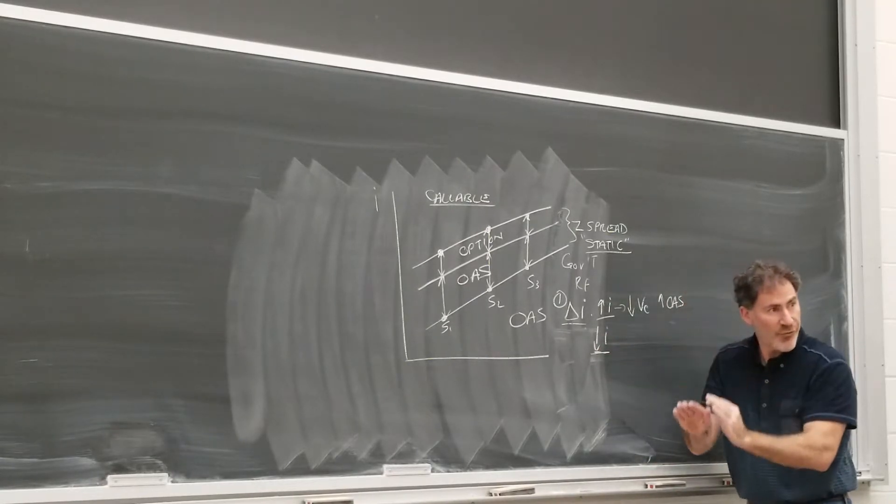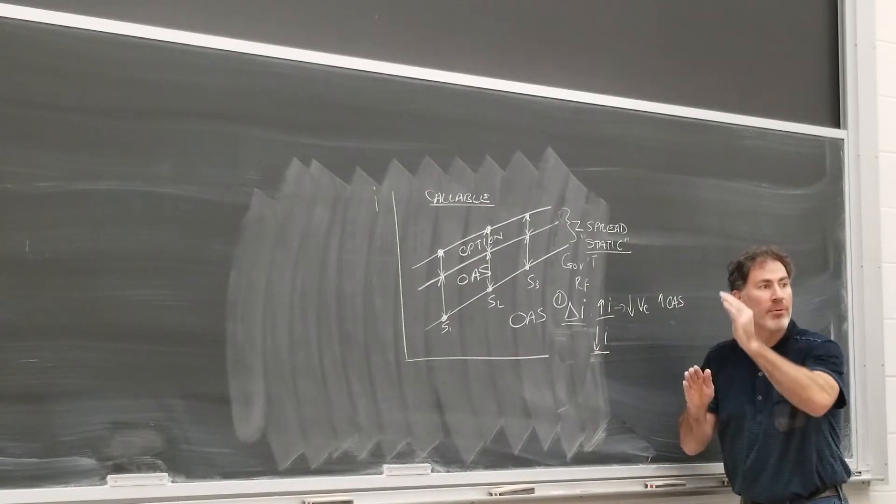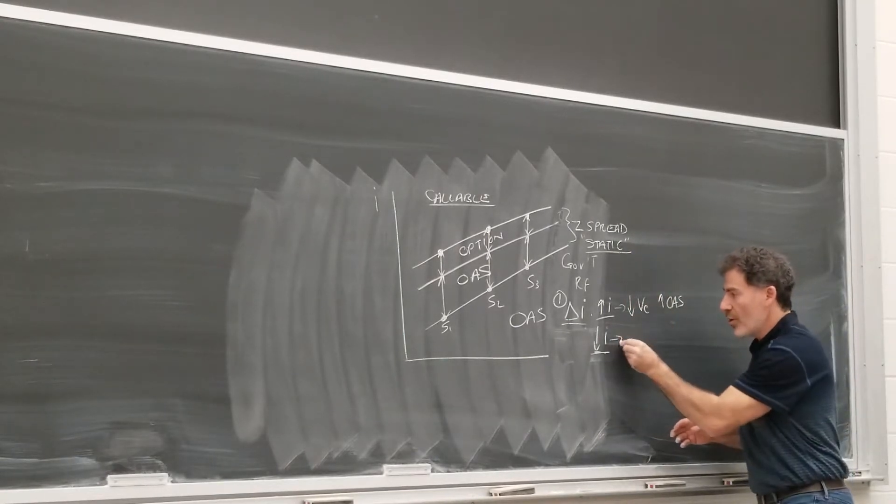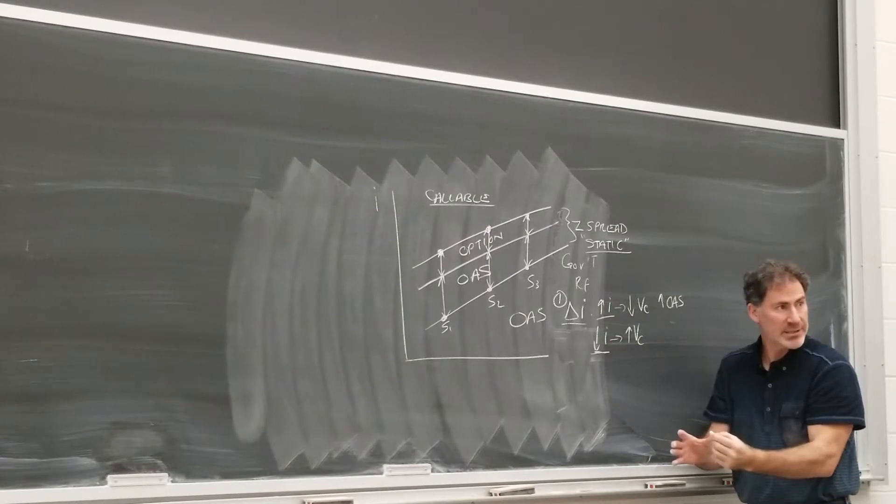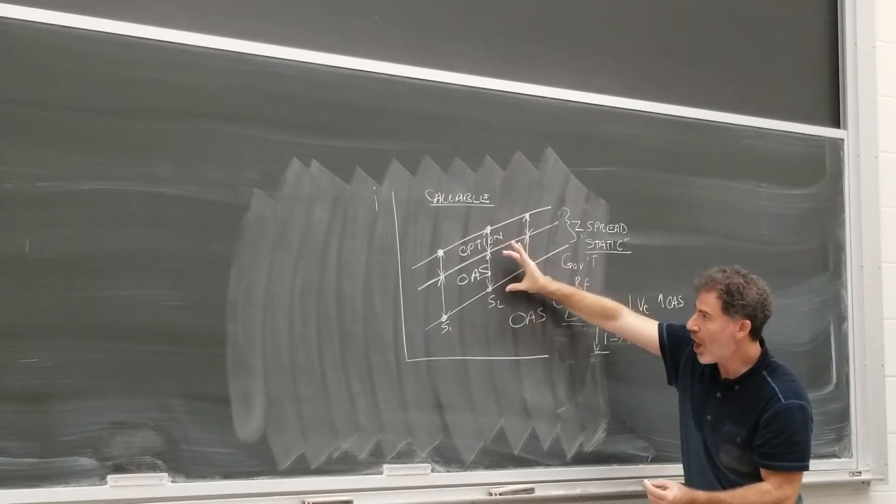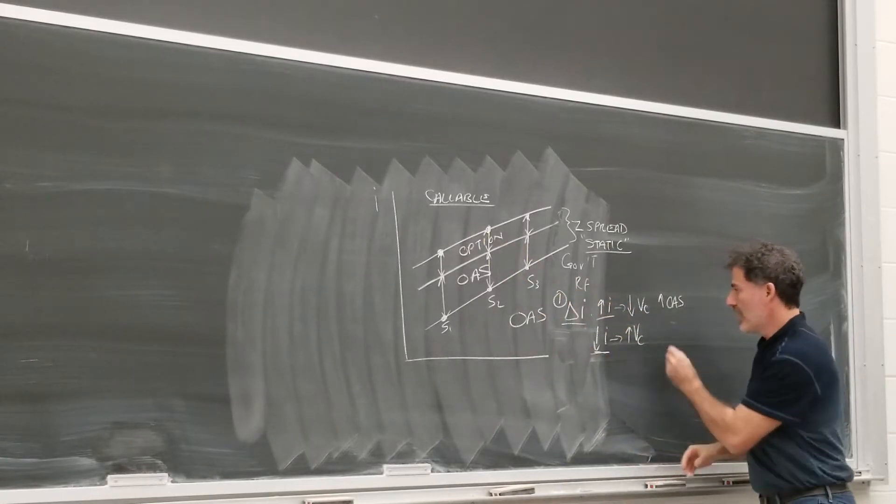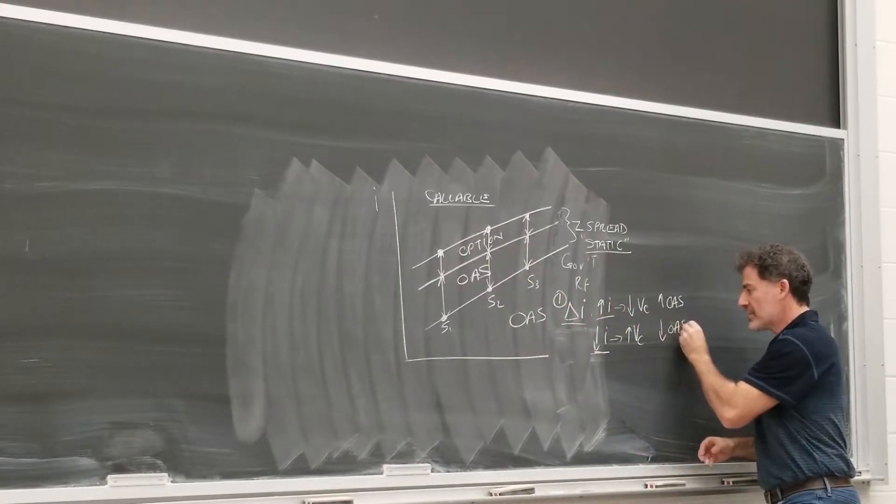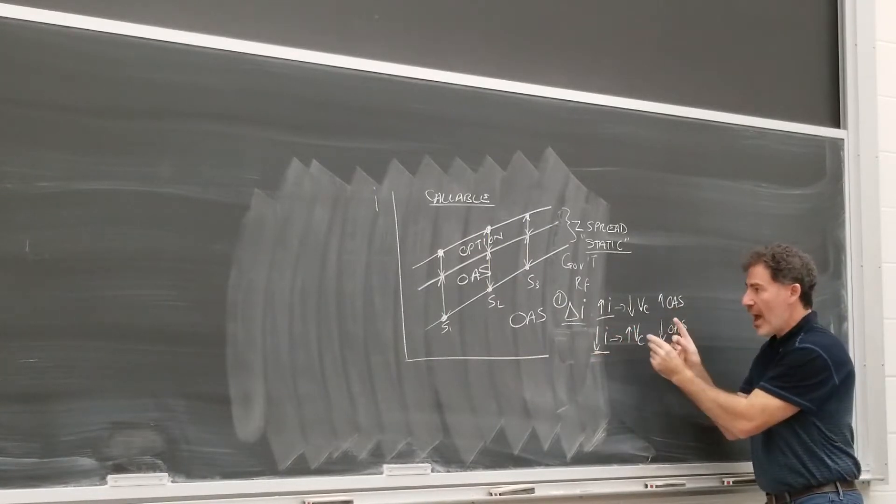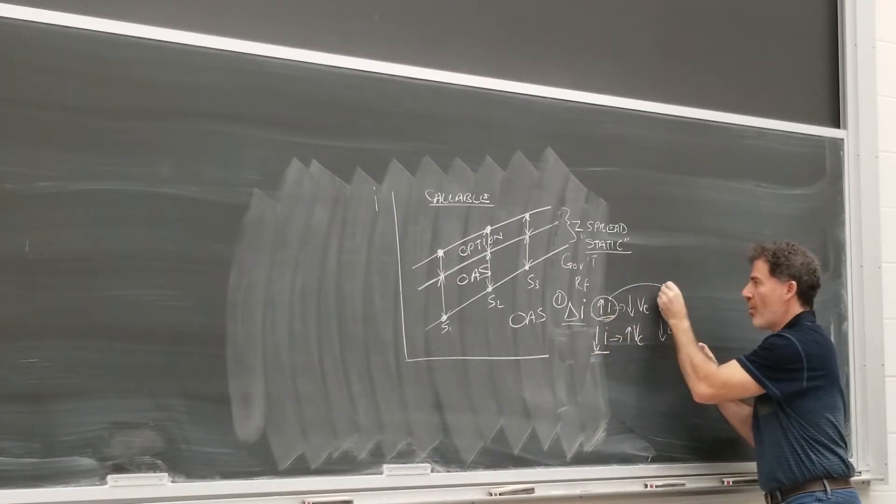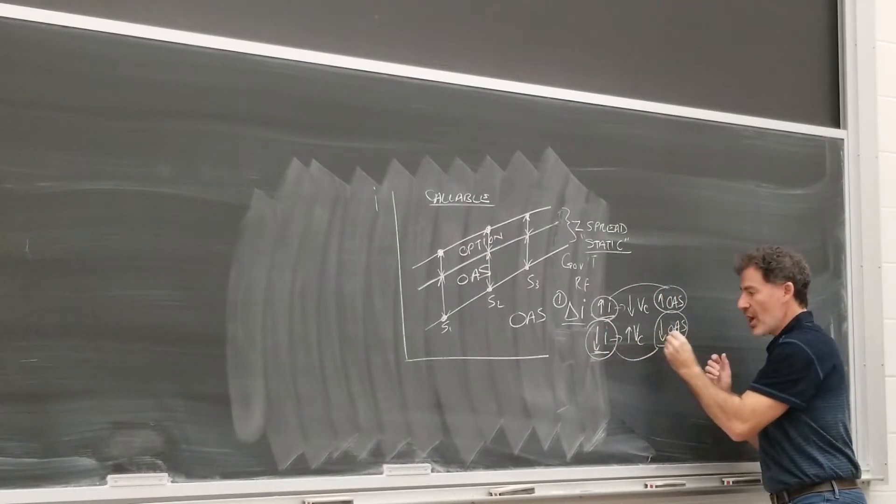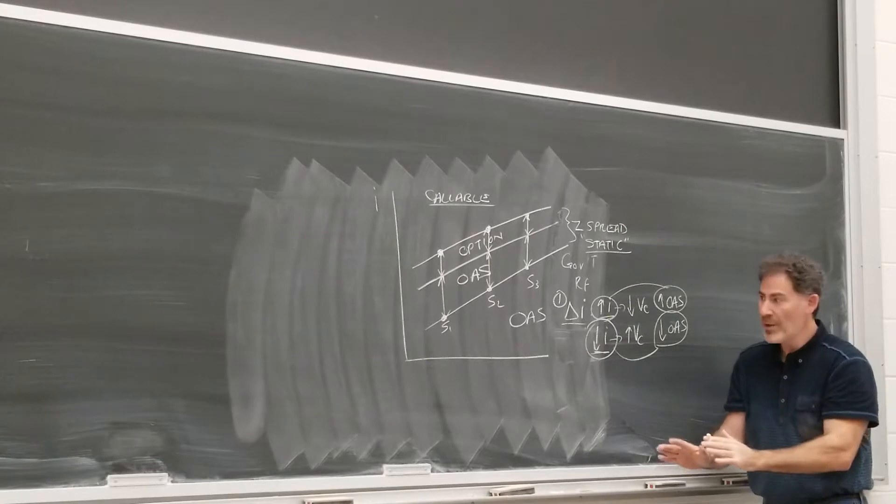Let's give ourselves a little bit more room here. And let's just talk about if interest rates fall. Well now bond prices rise. This call option moves into the money. So the value of this call increases. So if the value of the option increases, that must mean the OAS is decreasing. So changes in interest rates, we now know rising interest rates cause the OAS to increase. Decreasing interest rates cause the OAS to fall.